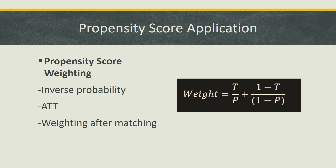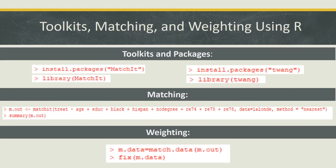There are different toolkits, commands, and functions that can be used by various software, but for this video we'll focus on using R. When dealing with R, there are different toolkits for weighting and analyses. MatchIt and Twang are heavily utilized for these types of analyses and can be installed using the commands provided under the Toolkits and Packages section. The Twang toolkit contains functions used to estimate and evaluate propensity scores and associated weights. MatchIt is used to select matched samples. The regression function listed under the Matching section is an example taken from a dataset labeled Lalonde. As you can see, you have the treatment, the different variables we are using, the data we are pulling from, and the method, which is nearest, as indicated using quotes.